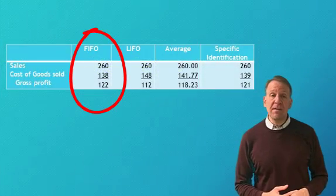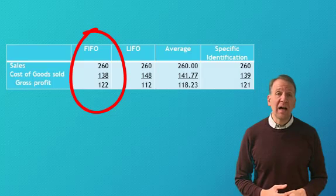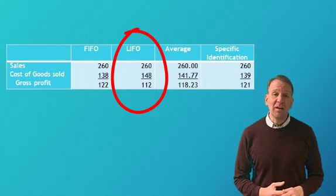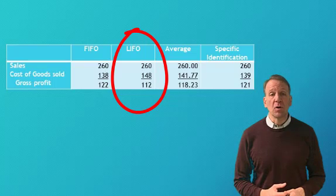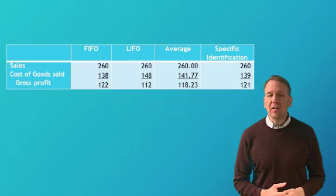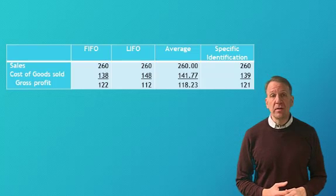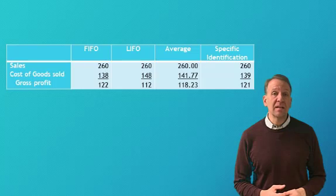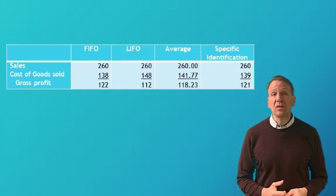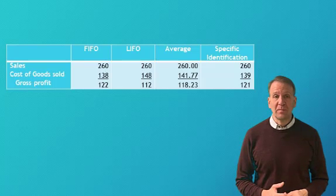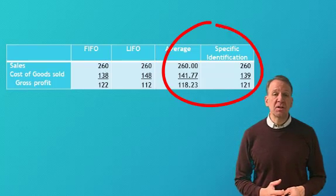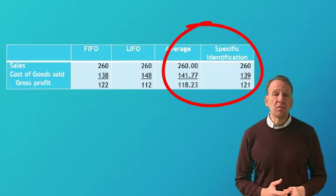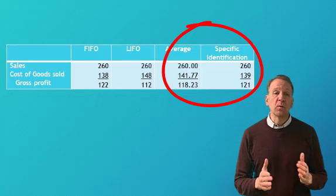Here on the screen, you can see that under the FIFO method, we calculated the highest gross profit, whereas under the LIFO method, we calculated the lowest gross profit. In our example, prices were increasing on the inventory items — as we were purchasing these inventory items over time to sell, the prices were increasing in amount. You can see under the average method and specific identification, their gross profit amounts were in between FIFO and LIFO.